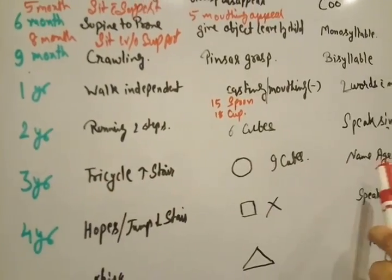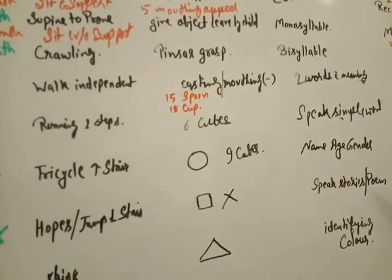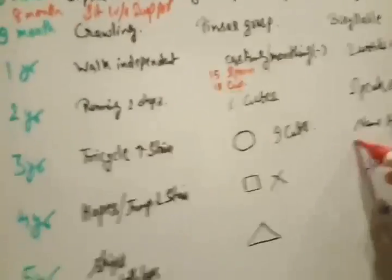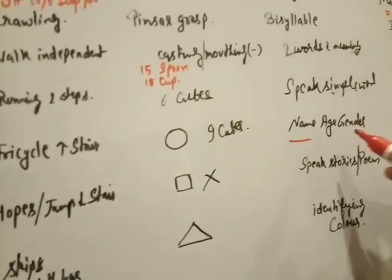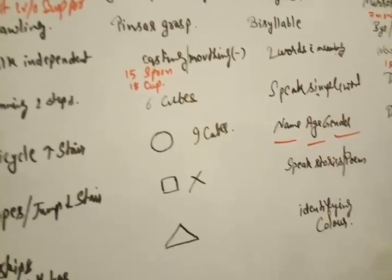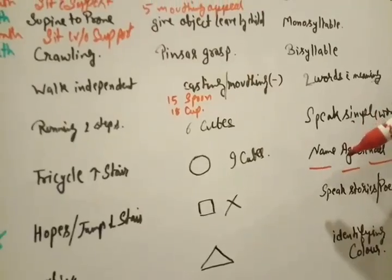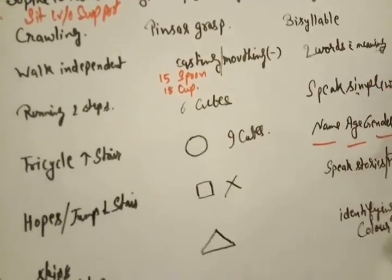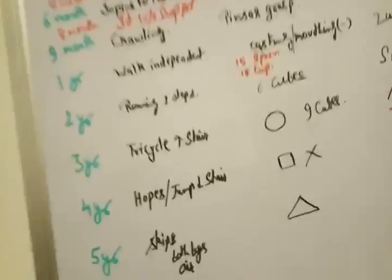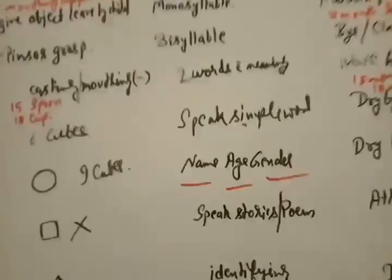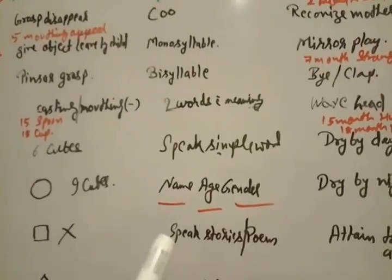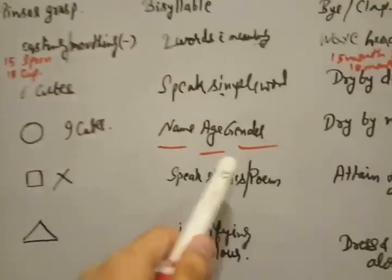In case of 3 years, child will speak 3 words: name, age and gender. If you ask what's your name, he will be able to speak his name. If you ask what was your age, he will answer his age.